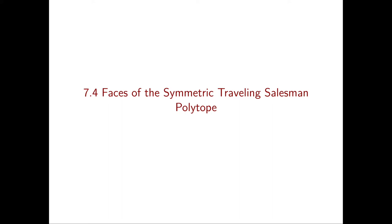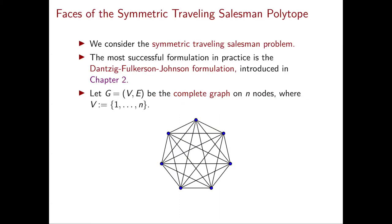In this chapter so far we discussed quite a bit the 0-1 knapsack set. In this section instead we're going to be talking about the traveling salesman polytope. In particular we will consider the symmetric traveling salesman problem or TSP, and we've already seen this problem in chapter 2.